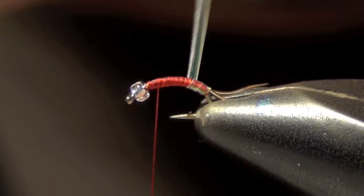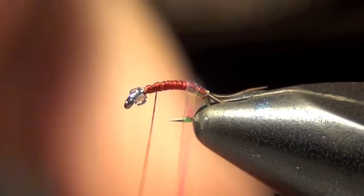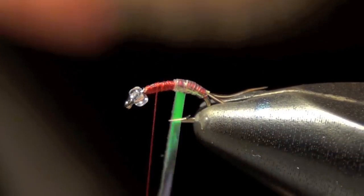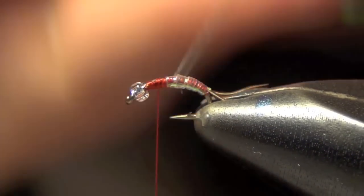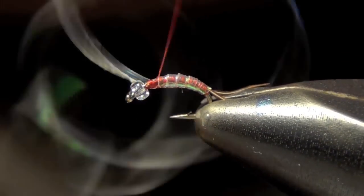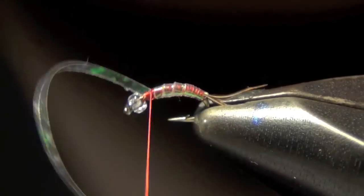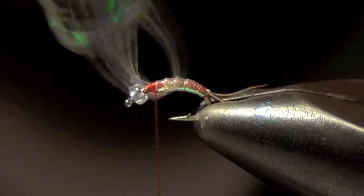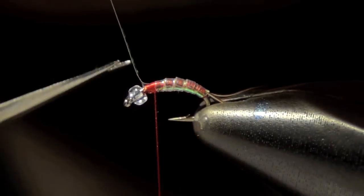Now I'm just going to take this material and I'm going to wrap this around the body. It gives it kind of an iridescent look and I capture it and I trim it out.